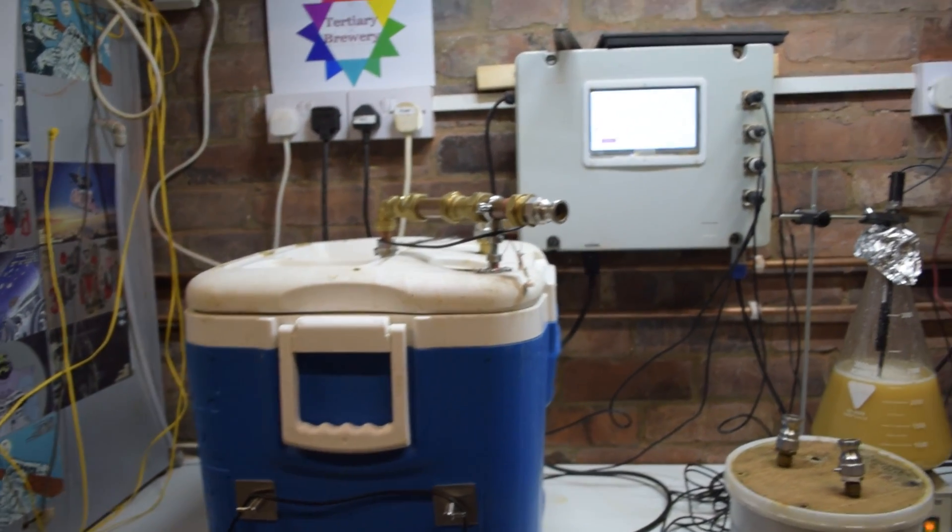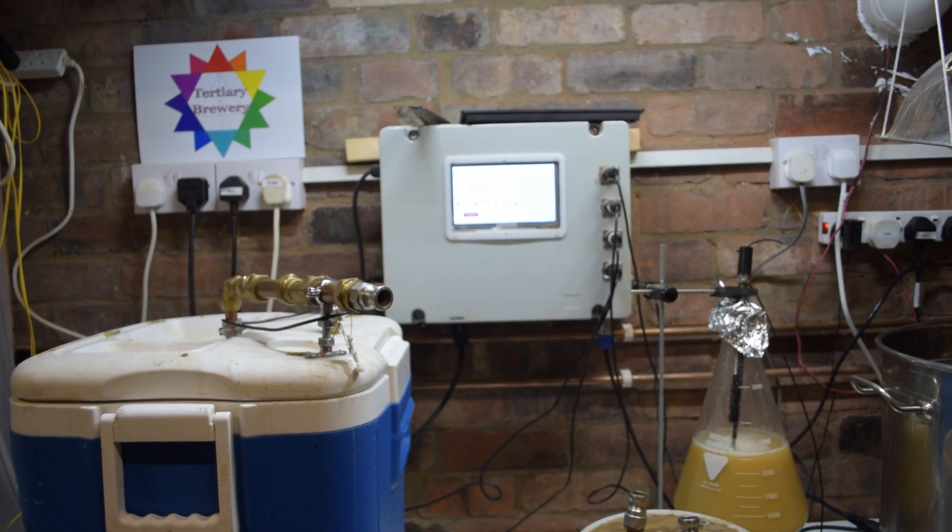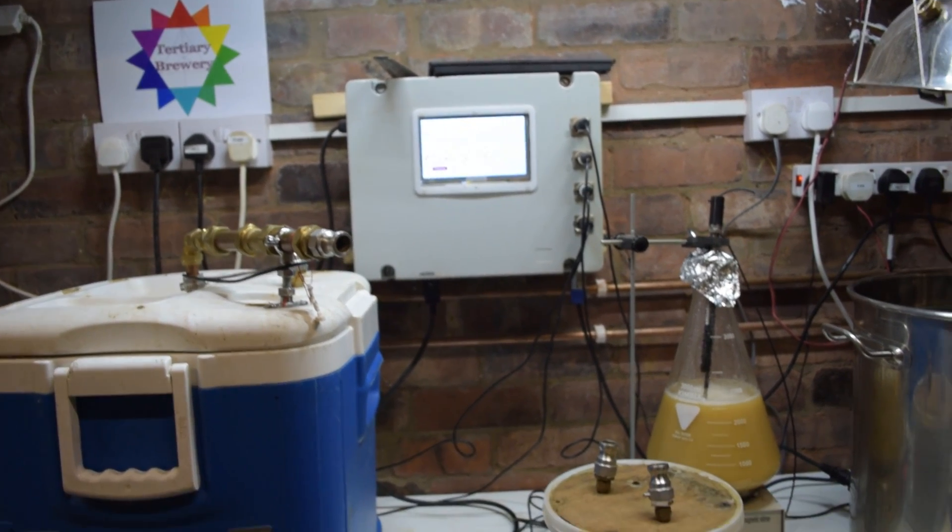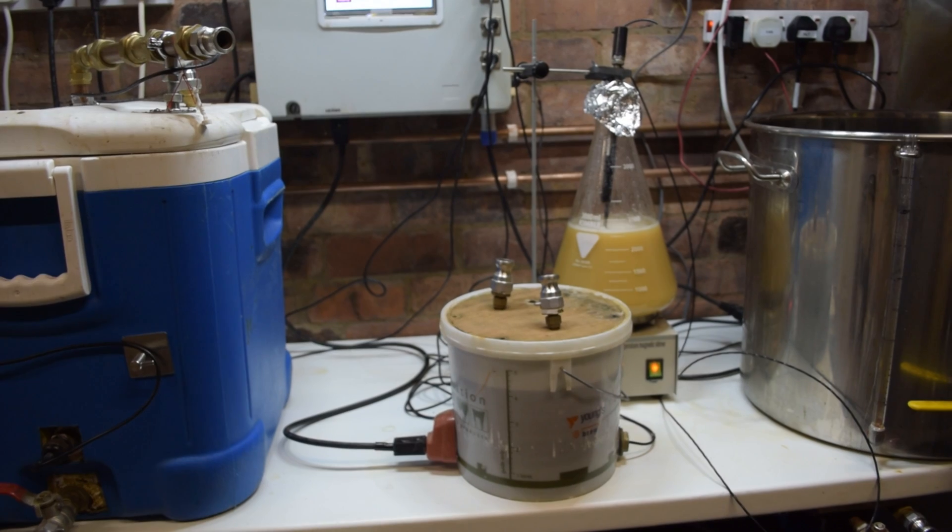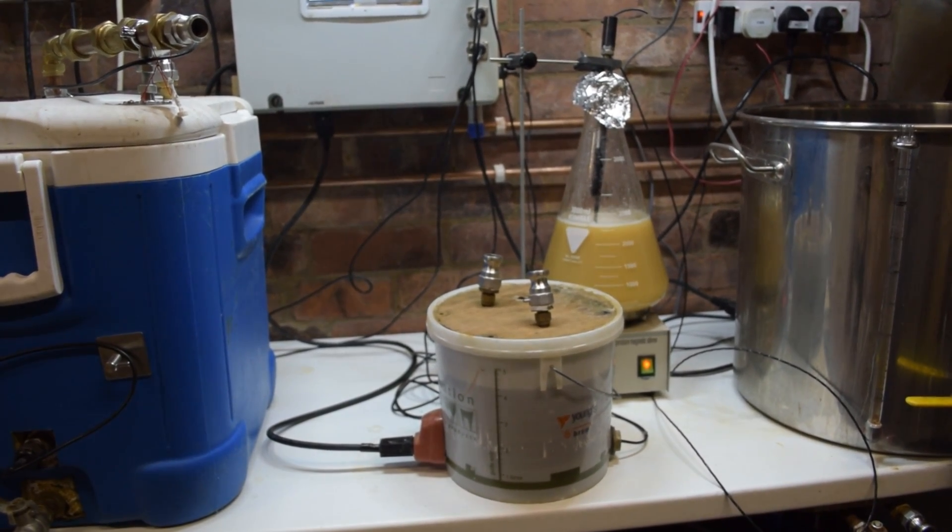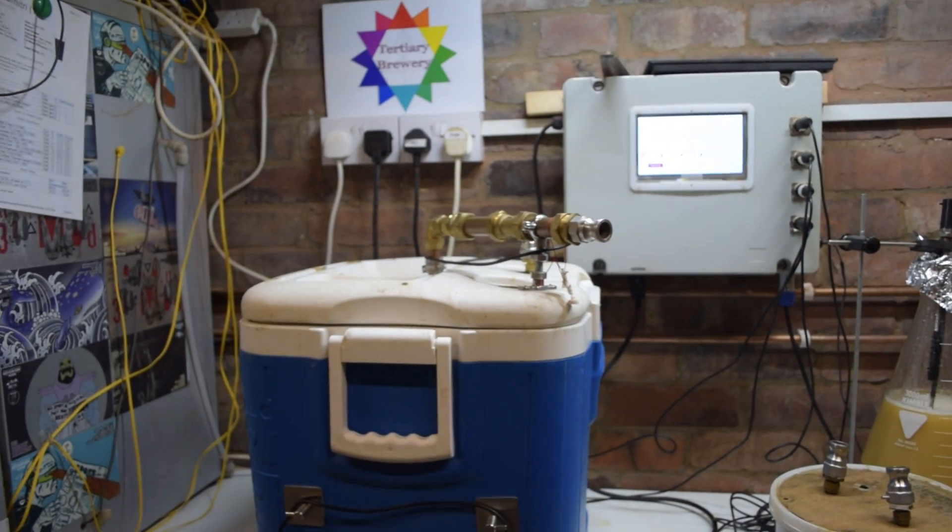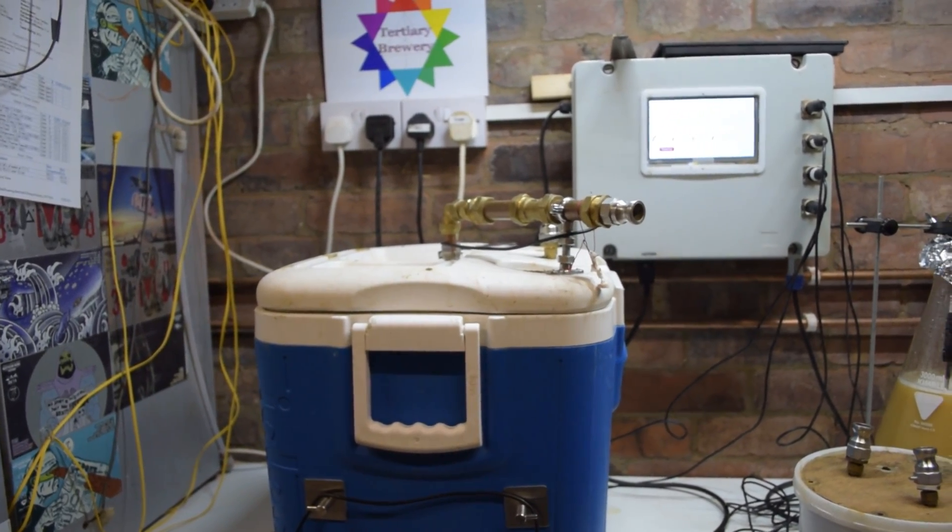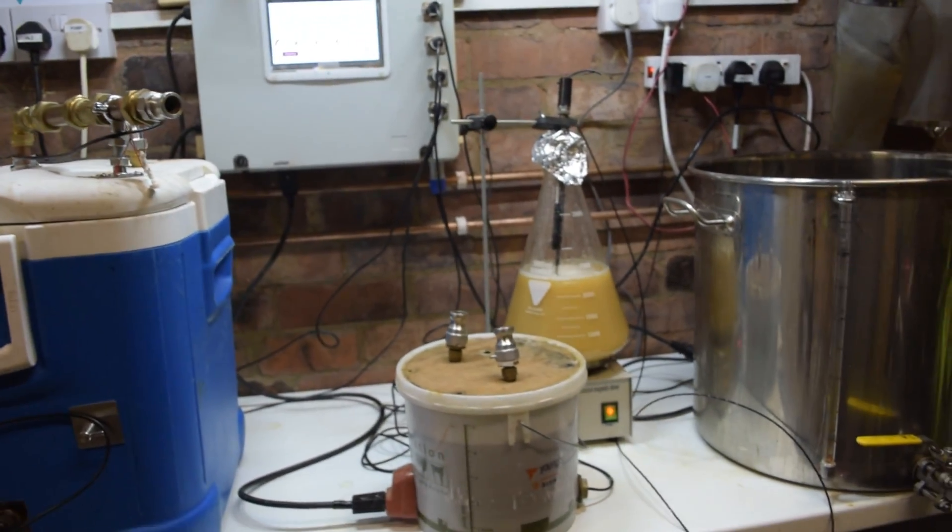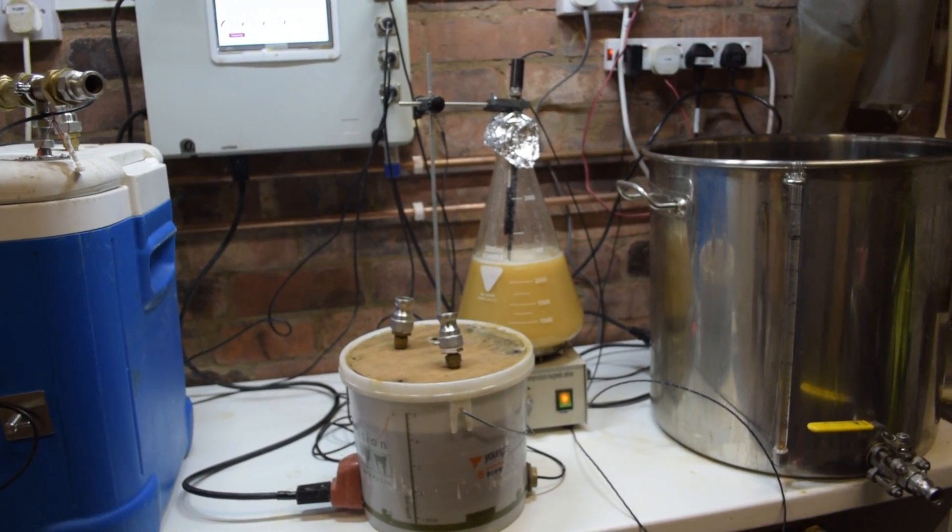We've loaded the setup onto the controller. The Hermes tank is full of water, plugged in with a temperature sensor in it. The two temperature sensors attached to the mash tun are also plugged in. We have some yeast getting ready.